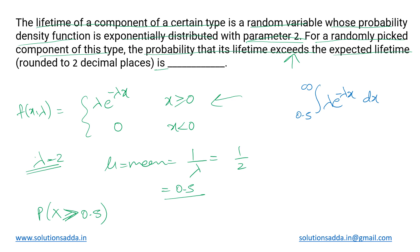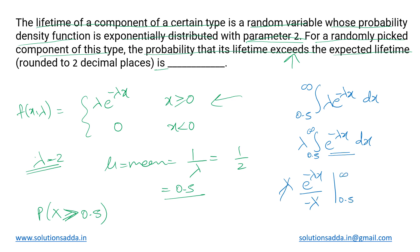Since lambda is a constant with value 2, we take it outside and perform the integration of e raised to minus λx dx within these limits. The result of the integration is e raised to minus λx upon minus λ. The two lambdas cancel out, leaving minus e raised to minus 2x, and we substitute the limits.